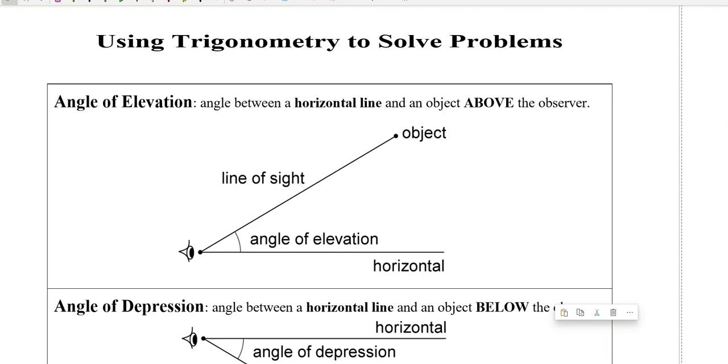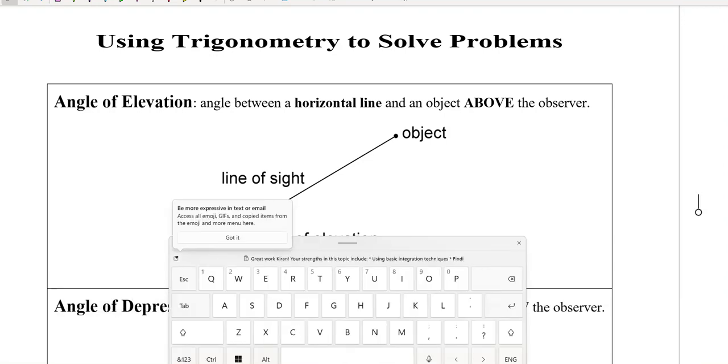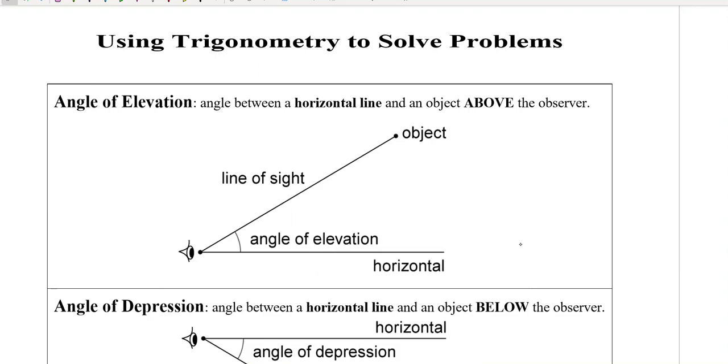All right, so this last section is nothing new in terms of how to solve things. The only bit that we're adding in here is wordiness. We're going to be having word problems, but we're still going to be solving and using SOHCAHTOA to find either sides or angles. Some of the ones in the exercise even use Pythagorean theorem as well.